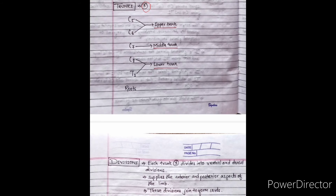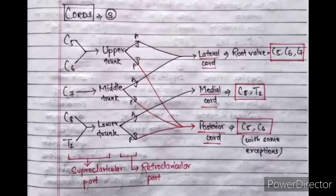The divisions join to form the cords, which are also three in number: the lateral cord, medial cord, and posterior cord. The lateral cord is formed by the ventral divisions of the upper and middle trunk, so its root value is C5, C6, and C7. The medial cord is formed by the ventral division of the lower trunk, with root value C8 and T1. The posterior cord is formed by the dorsal divisions of all three trunks, with root value C5 through T1.